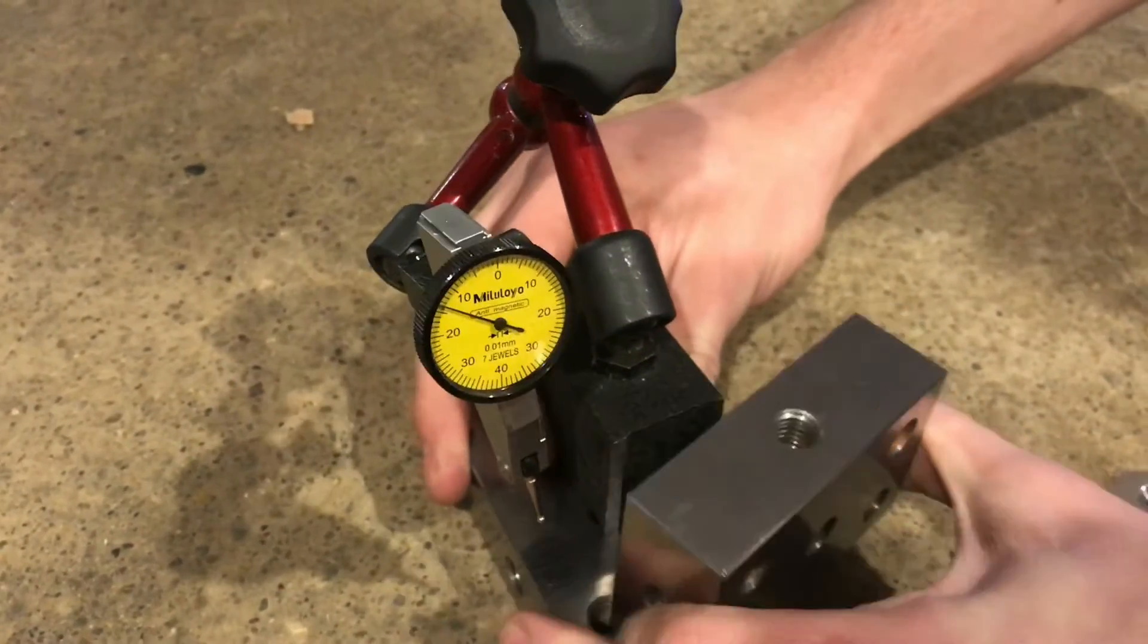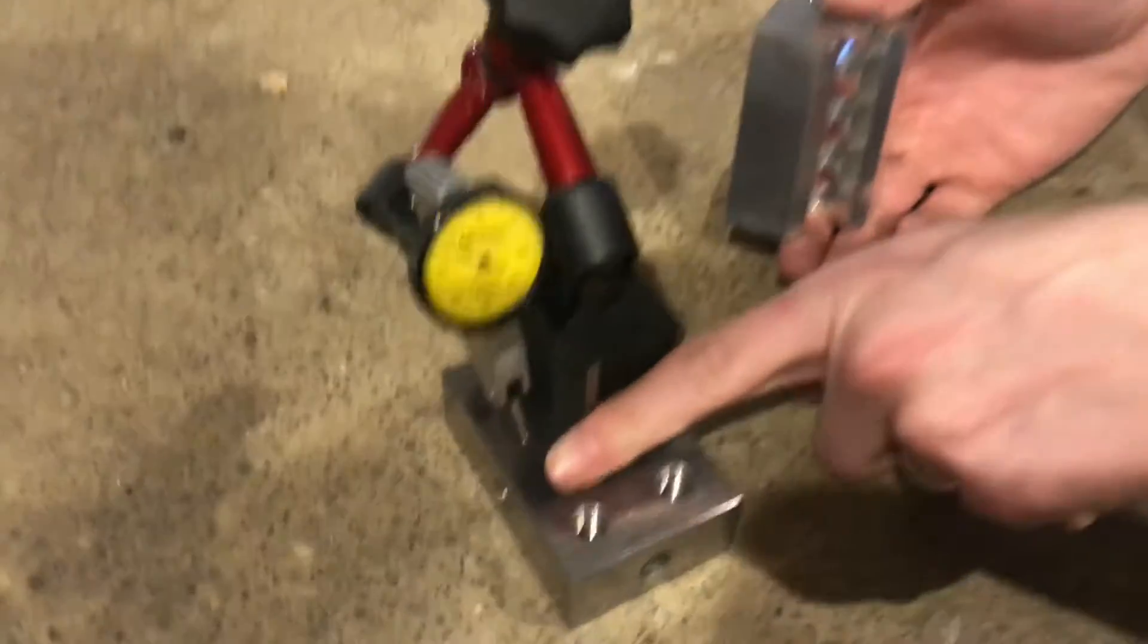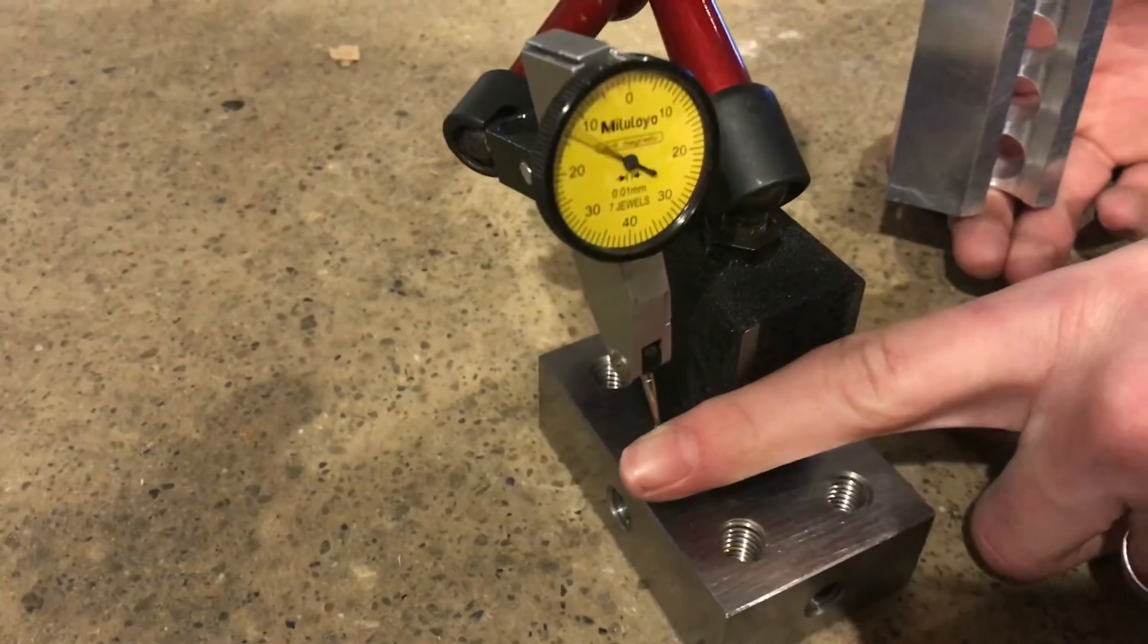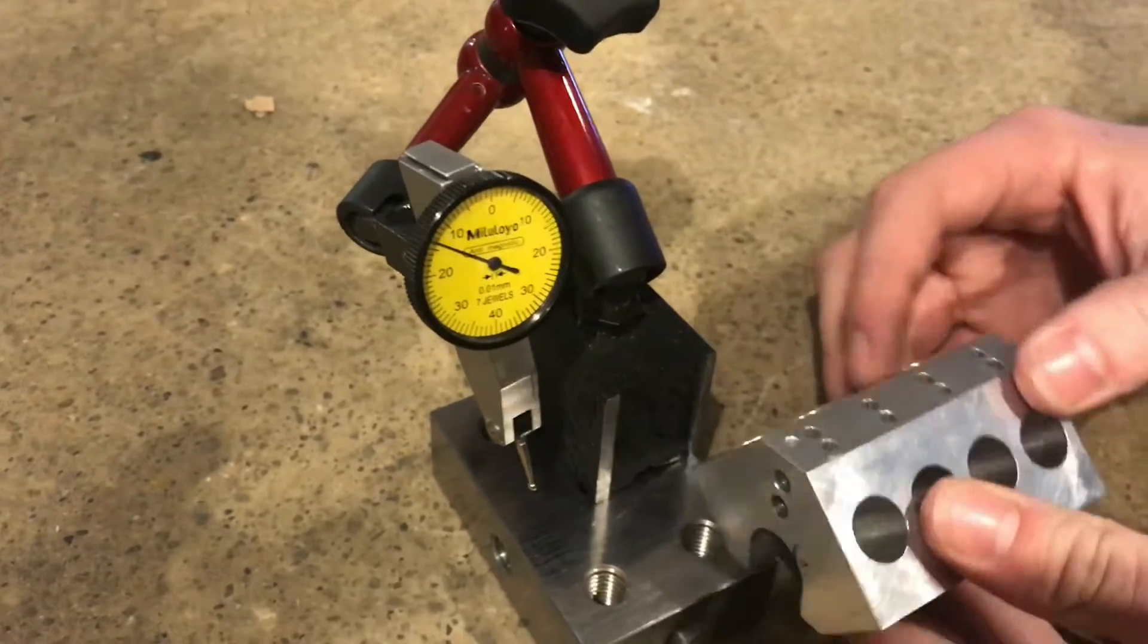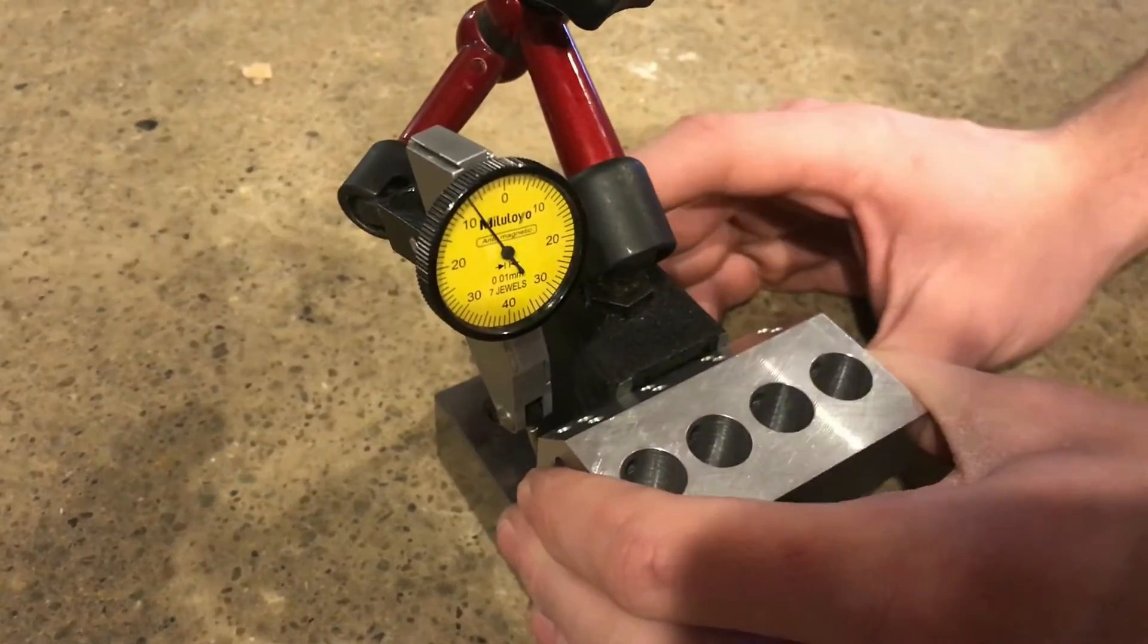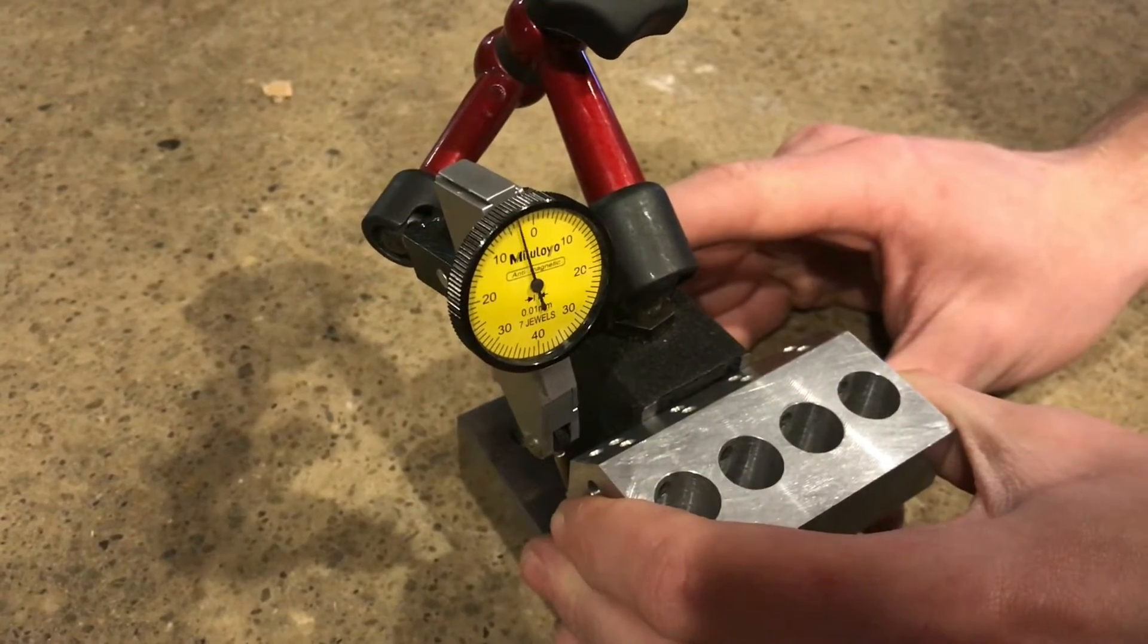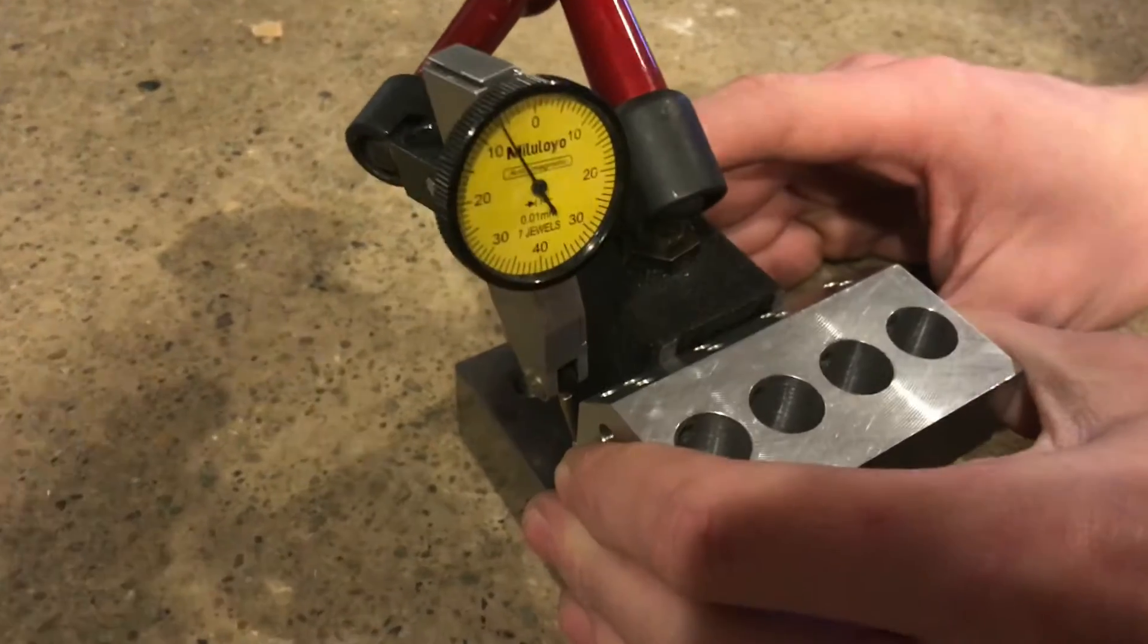So if I take this off—now because these faces are in line with the needle, not the plunger, but the needle—that means if I put this on here, it should still be in line at six or seven. And it looks like it is. At this point, it's pretty perpendicular.